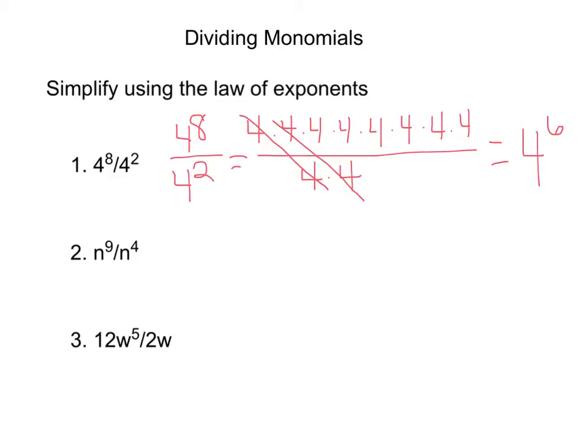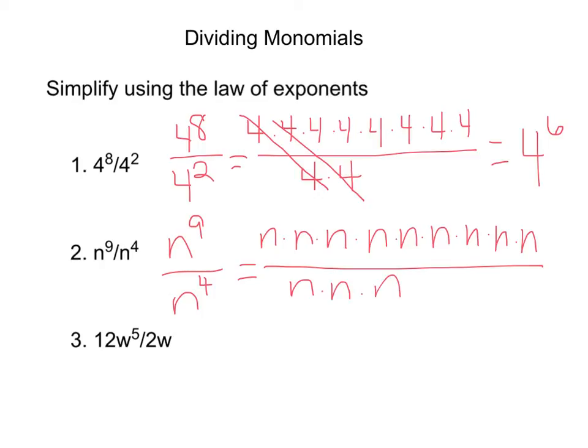The same works for variables. If we have n to the ninth divided by n to the fourth, it would be n nine times divided by n four times. They're going to cancel out.